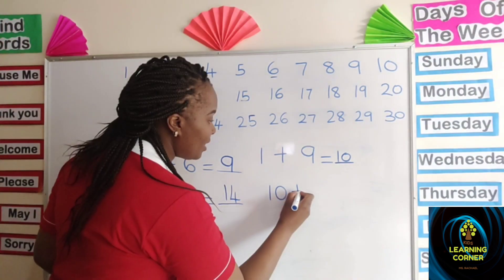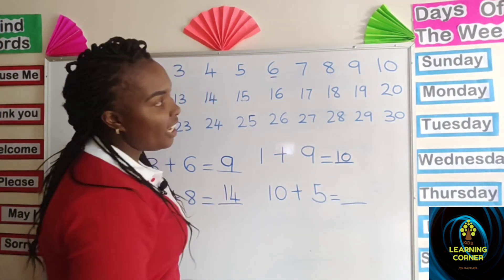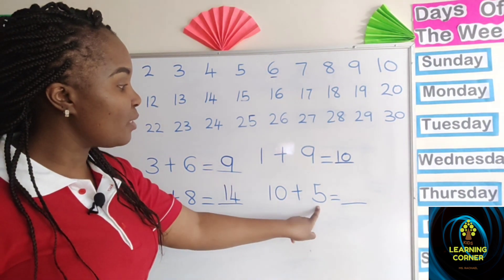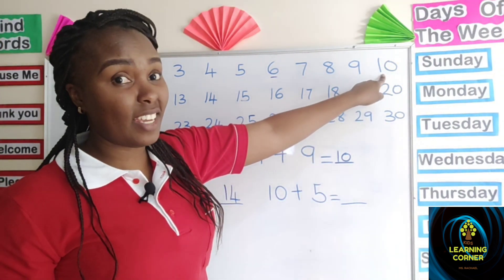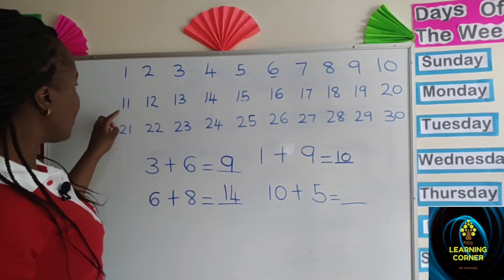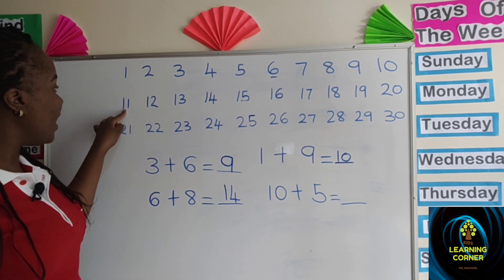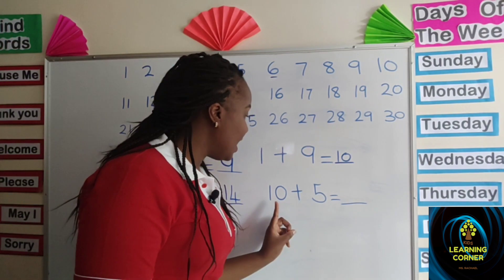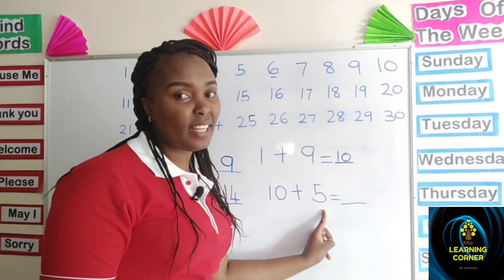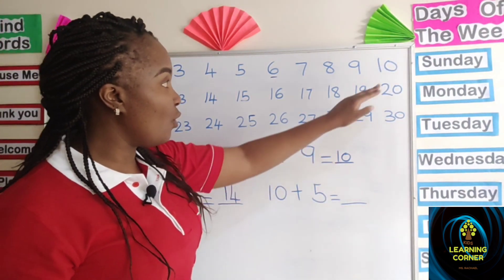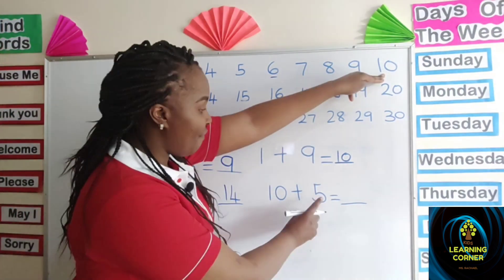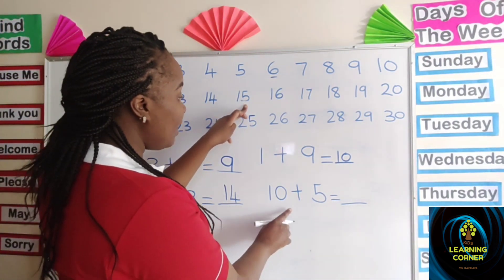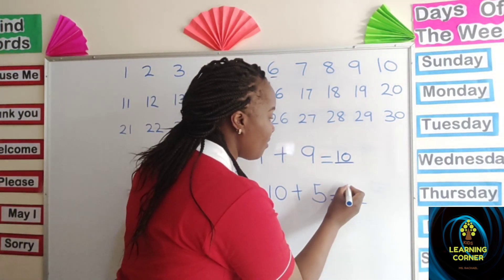Let us try ten plus five. It's very simple. Where do I start? I first note where number ten is, then I count five times forward. We do not start where ten is because that is the starting number. We start from eleven. One, two, three, four, five. The total sum of ten plus five is fifteen. I come here and write my answer.